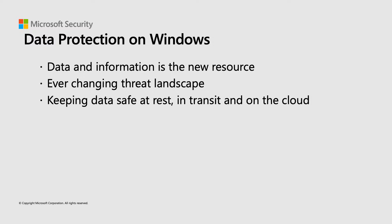Let us first understand why we need data protection. In today's world, where some dub it as the information age, data and information hold sway over all else. Data available in any form can be made sense of and can be used in malicious ways against the user. The operating system on the Windows device itself can be tampered to leak data, and could avoid all detection till it's too late, not to mention the variety of attacks targeting the end user — all of it to get at the personal data of the user. This means data needs to be protected at all times: when the device is at rest, when data is transiting to cloud storage, and while it's in the cloud storage. In today's session, we'll focus on the data-at-rest piece and how the security features provide overall security, making the Windows device a secure one.